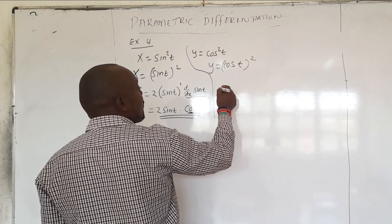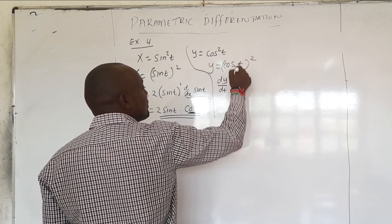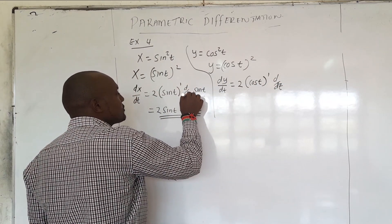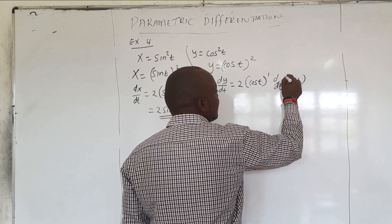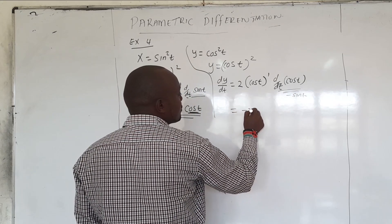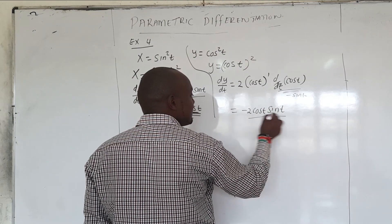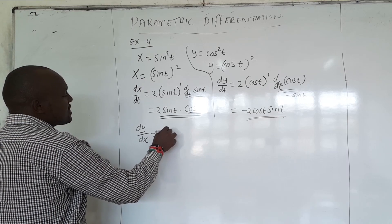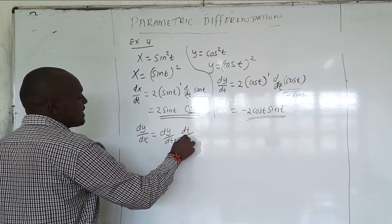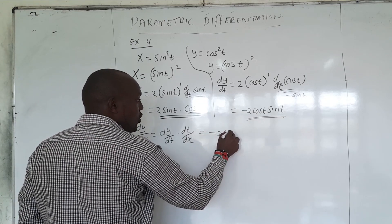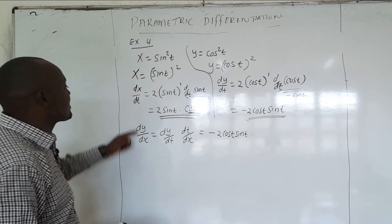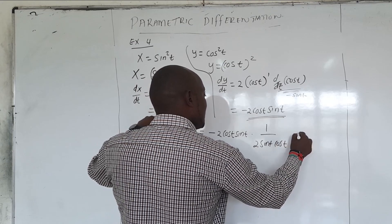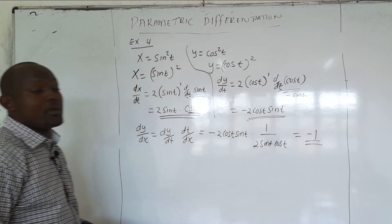For dy/dt with y equals cos T squared: bring down the 2, giving 2 cos T to the power 1, then differentiate cos T to get negative sine T. So dy/dt equals negative 2 cos T sine T. Now for dy/dx, we compute dy/dt times dt/dx: that is negative 2 cos T sine T times 1 over 2 sine T cos T, and everything cancels to give dy/dx equals negative 1.